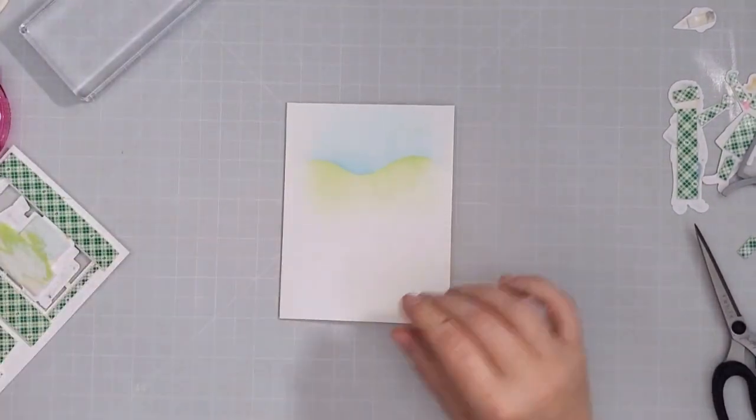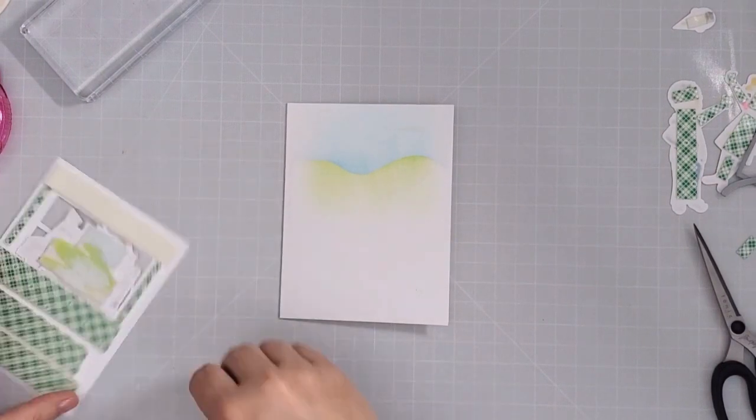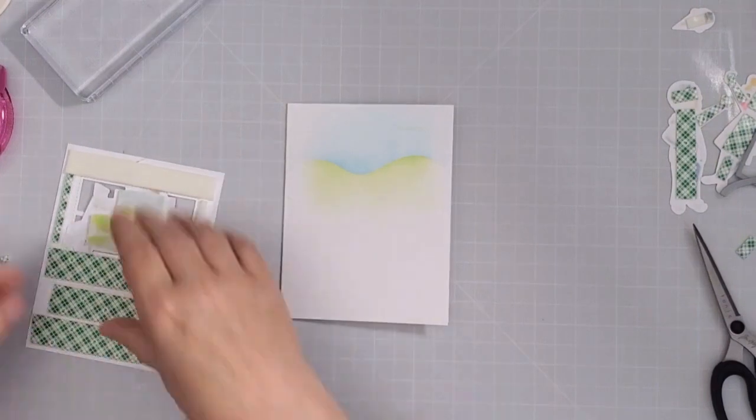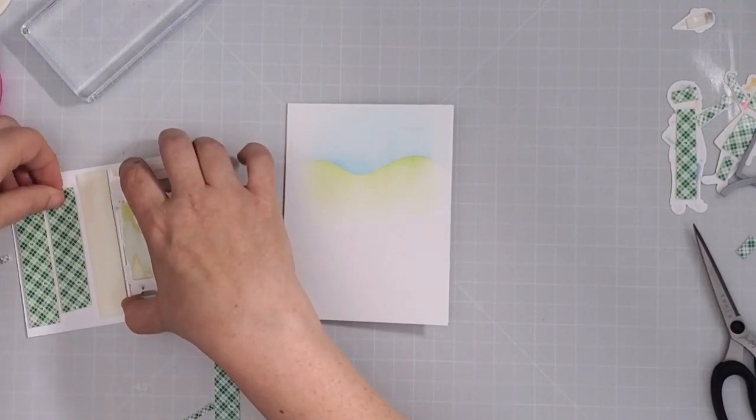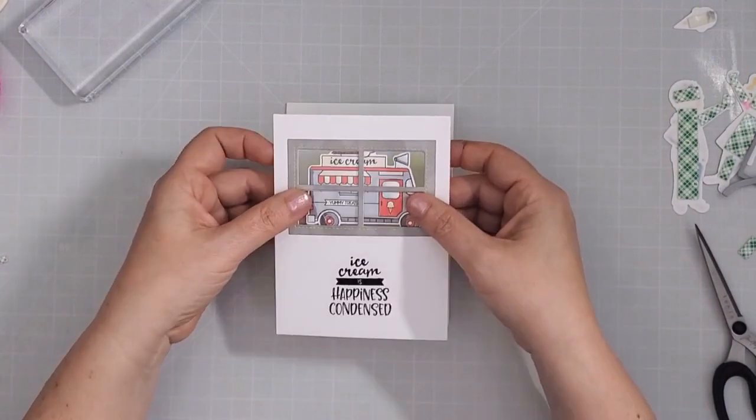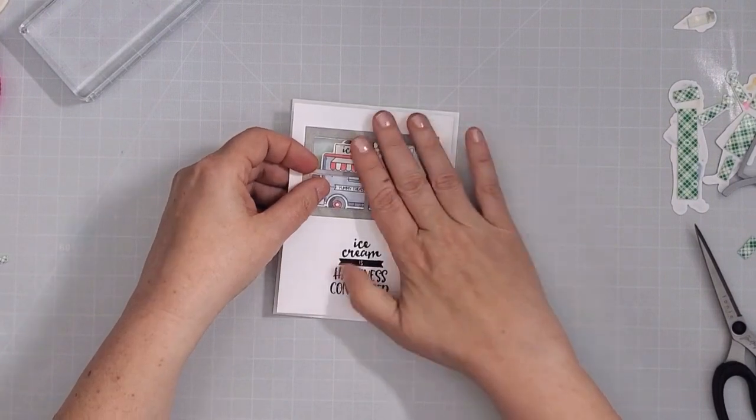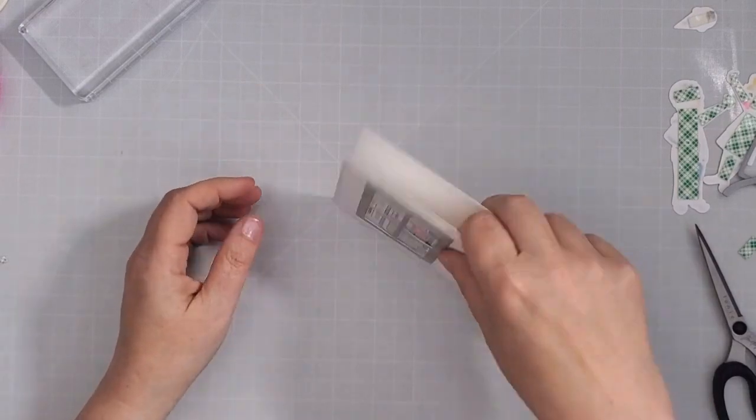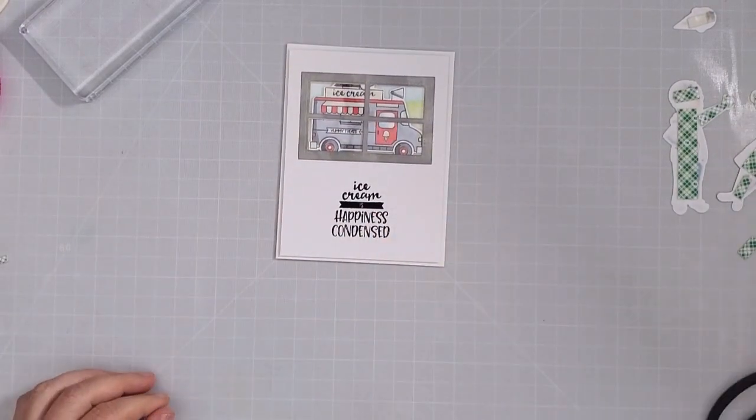I folded my ink blended card base and removed the release paper from the foam tape. You can see that I had also put foam tape on the back of the ice cream truck and that was my mistake. I felt like it needed a bit more thickness so I added a couple of pieces to the back and neutralized the stickiness but because it was the same thickness as the walls of the shaker window it really doesn't move which is disappointing. An extra die cut layer would have been a much better choice so you can learn from my mistake.